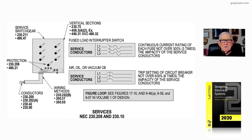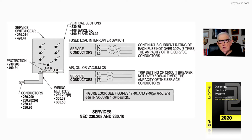Now let's look at figure 17-19, which deals with protection according to services. Notice the switchgear — we referenced 230.211 and 490.47 — and for protection we referenced 230.208 and 490.21. The vertical sections reference 230.75, 408.3A2 exception, 490.31, and 490.32.